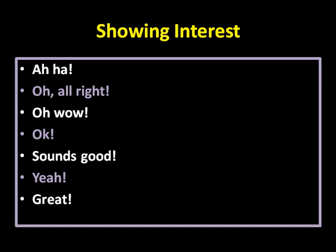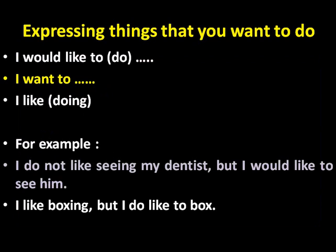Now if you want to express things you want to do, pay attention: we have three expressions. First, 'I would like to do'; second, 'I want to'; and third, 'I like doing.' For example: 'I would like to go to the dentist,' 'I want to go to school,' 'I like going to school,' 'I like traveling abroad.'